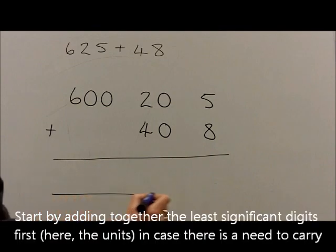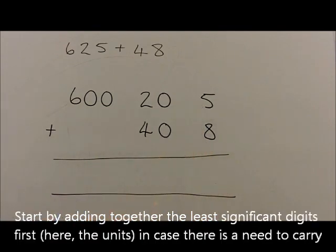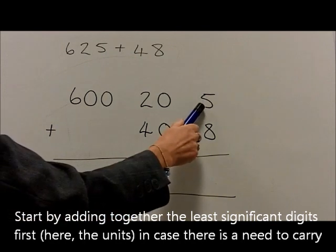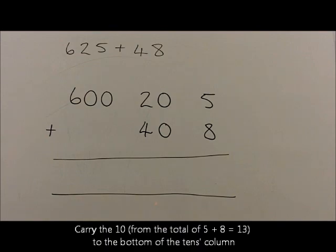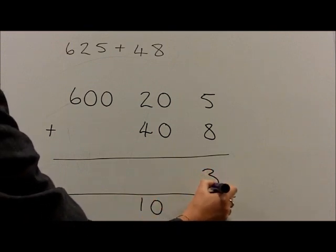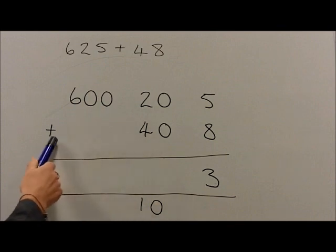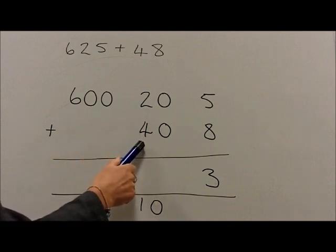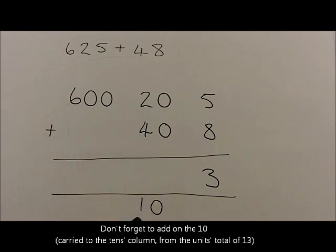We add together starting with the units first, but carry into the next column if applicable. So with 5 plus 8, that makes 13. That will be written as a 10 carried into the 10s column and 3 units. We then add 2 10s, which are 20, to the 4 10s, which are 40, giving us 6 10s — 60. Add one more 10, which gives us 7 10s, which are 70.